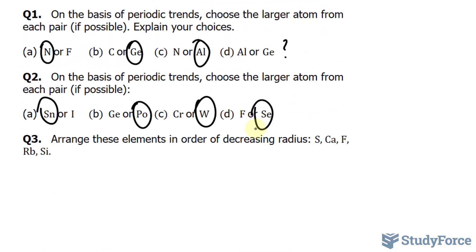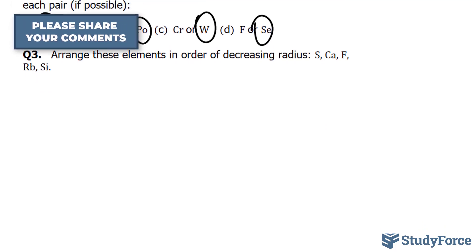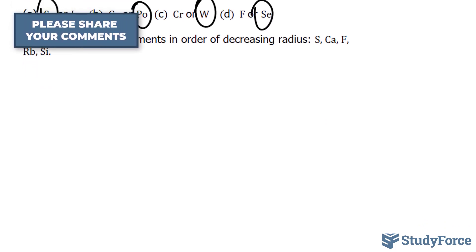In question number three, we have to arrange these elements in decreasing radius, so from largest to smallest. Let's find them on the periodic table. We have S, Ca, F, Rb, and Si. Sulfur, calcium, fluorine, rubidium, and silicon.